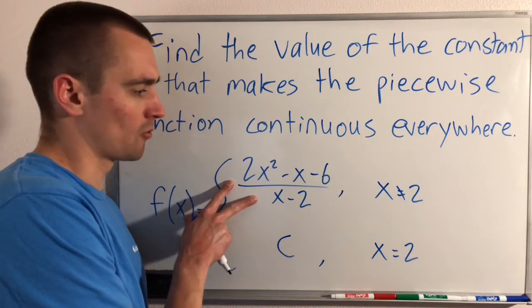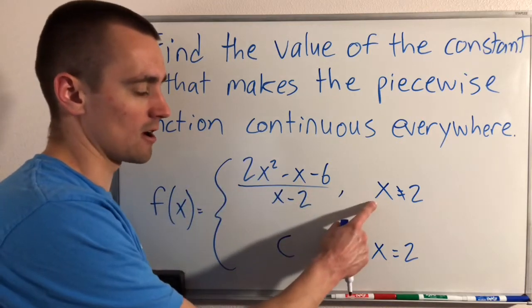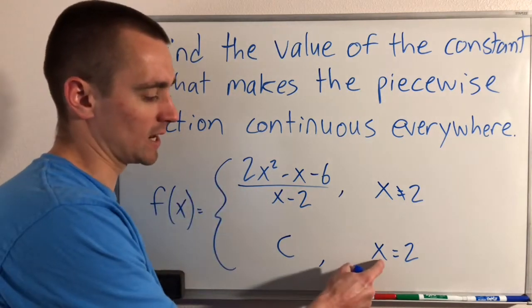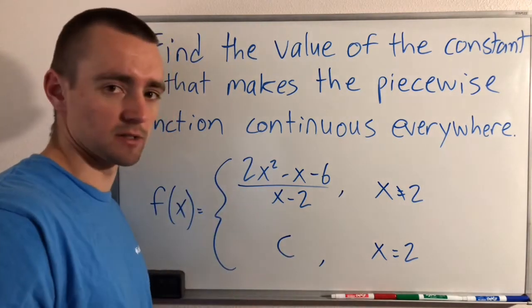So we have for all x values that are not 2, it's defined by this rational function here. And then when x equals 2, it's defined by this constant C.